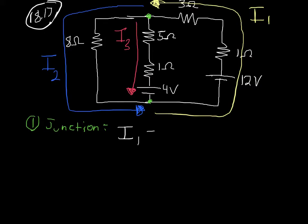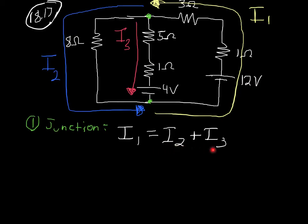The current leaving that junction is equal to I2 plus I3. I can see that clearly with all my arrows: I1 is going into my junction, I2 is going out of my junction, and I3 is also going out of my junction. So I1 in equals I2 plus I3 going out. That's my junction rule for this particular problem.